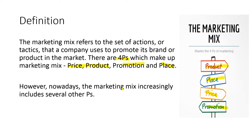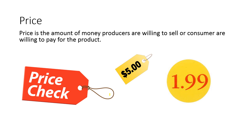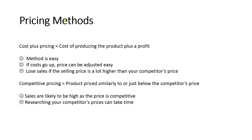The marketing mix increasingly includes several other Ps, which we will talk about at the end of this lesson. First, we'll talk about price. Price is the amount of money companies or producers are willing to sell their products for, or consumers are willing to pay for that product. There are different ways and methods of pricing.